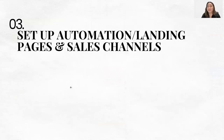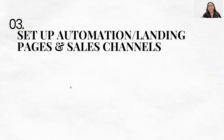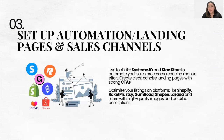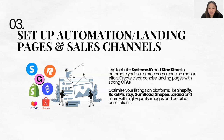Now that you have your products, the next important thing is to set up your automation. Like me, I can sleep and earn — I wake up with sales now after doing digital business for several months. Set up your landing pages, funnel pages, or sales channels. Use tools like System.io and StandStore to automate your sales processes, reducing manual effort. Others also use Shopify, RocketPH, Etsy, Gumroad, Shopee, Lazada, and other sales channels.